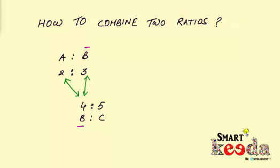The final ratio we get is: 2 into 4 equals 8, then 3 into 4 equals 12, and then 3 into 5 equals 15. So the combined ratio A is to B is to C is 8 is to 12 is to 15.